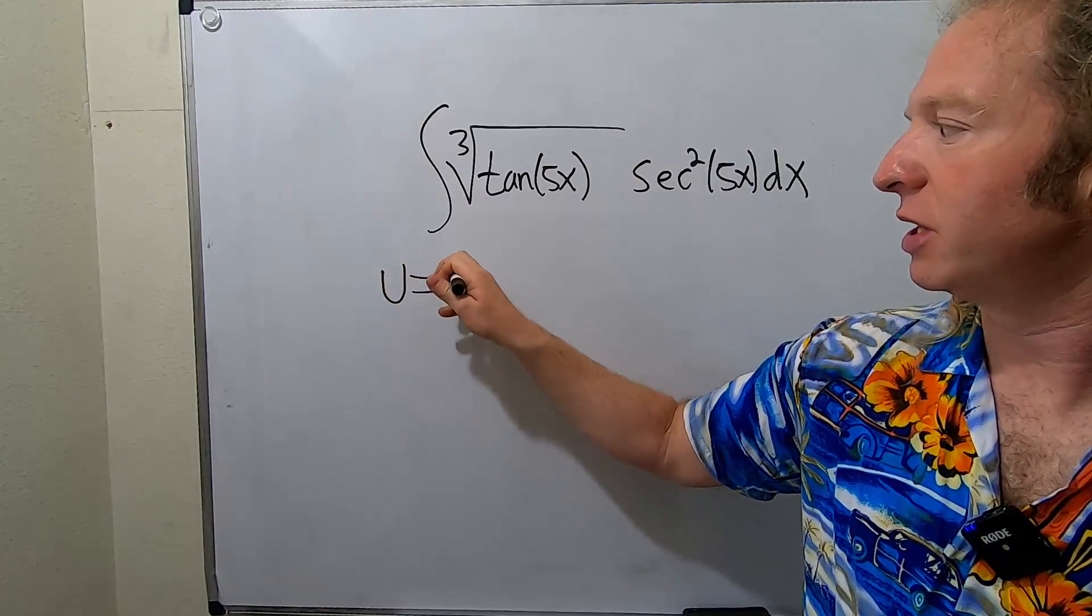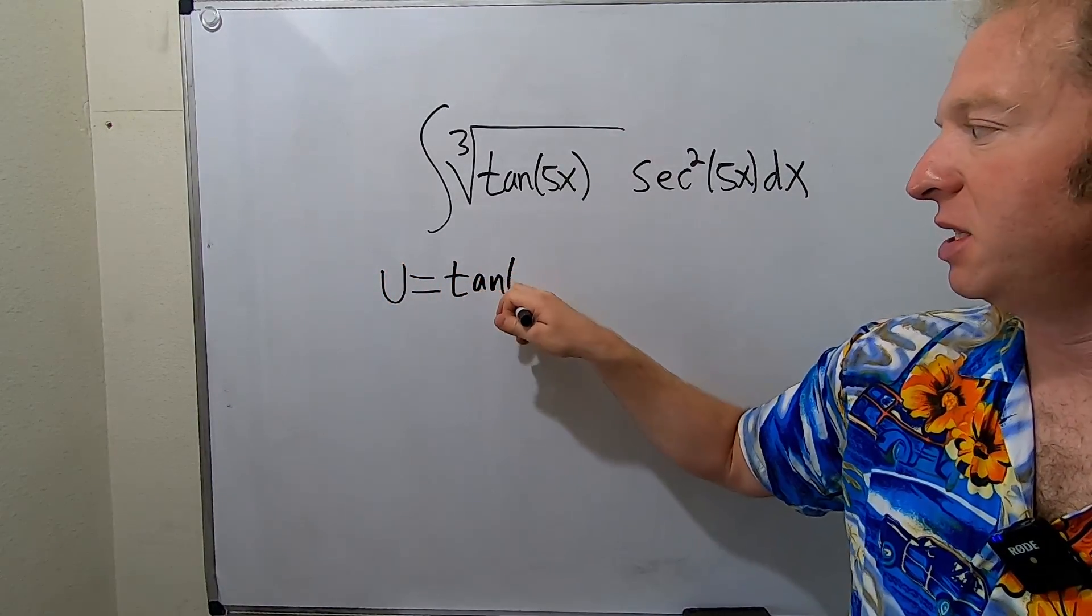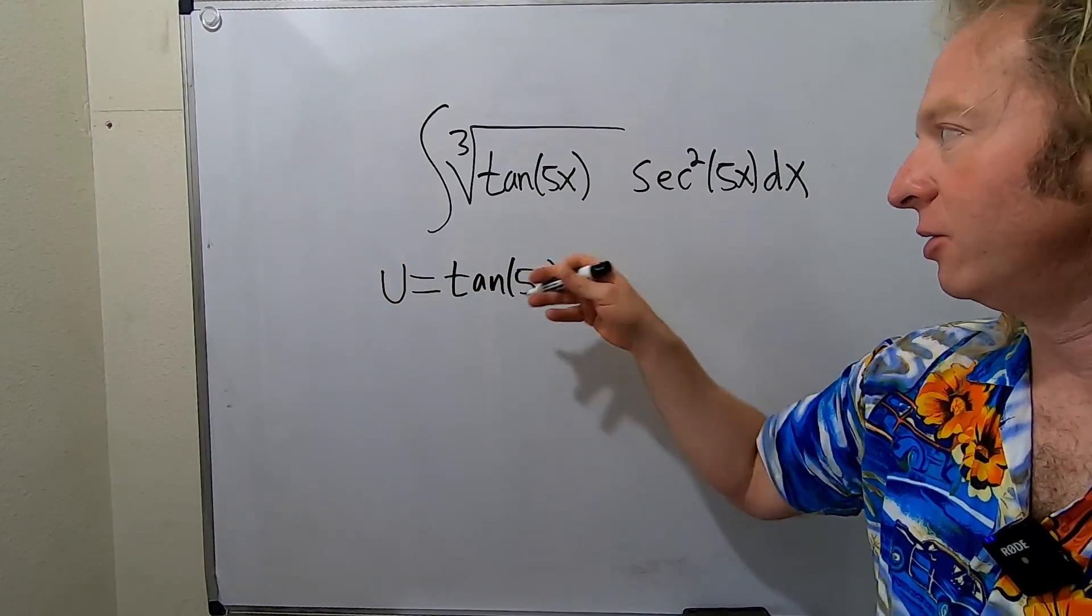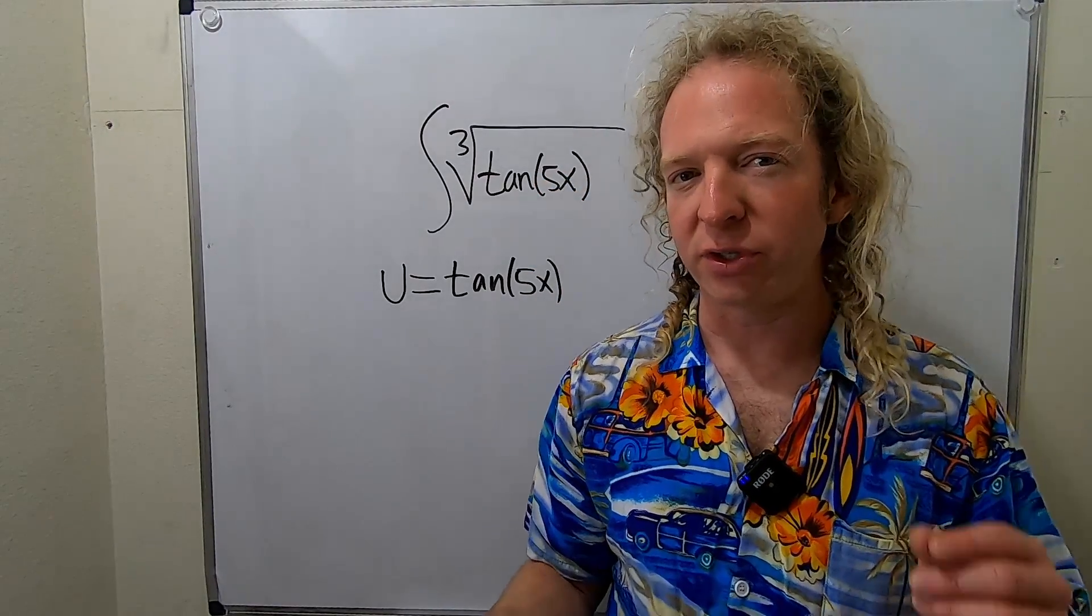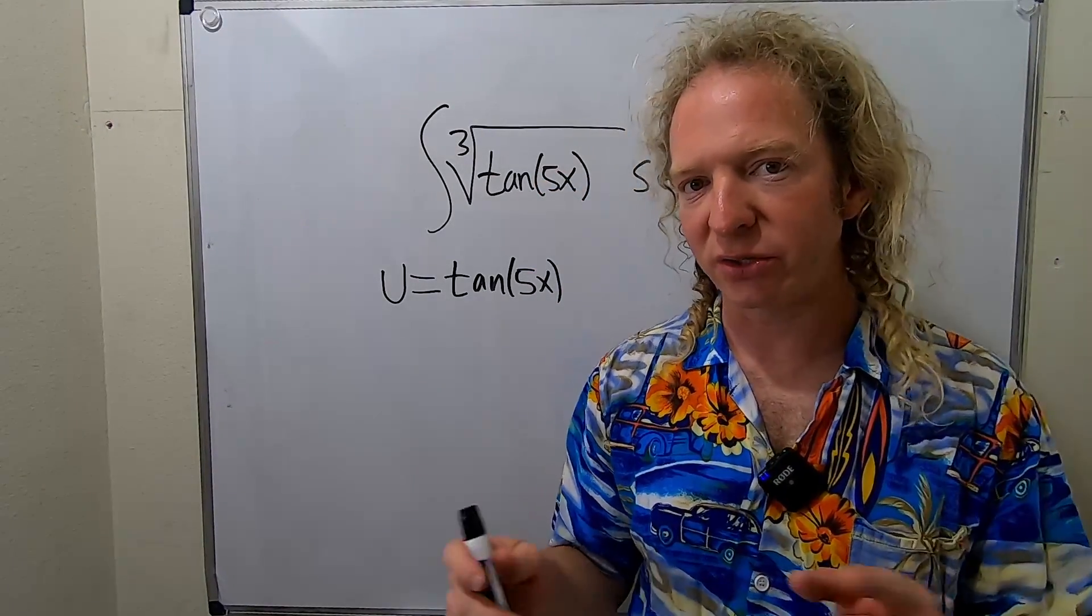So we'll let u be equal to the tangent of 5x, the piece that's inside the cube root. And now we're going to take the derivative.